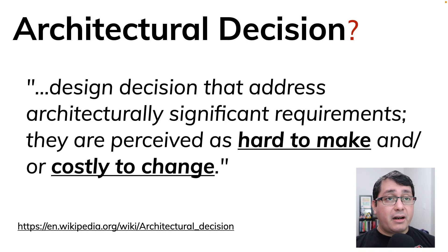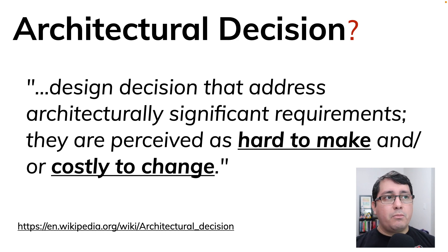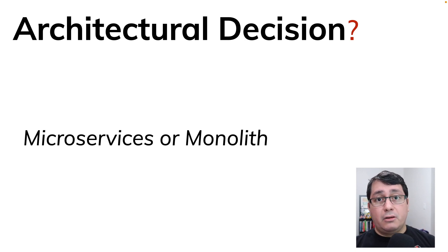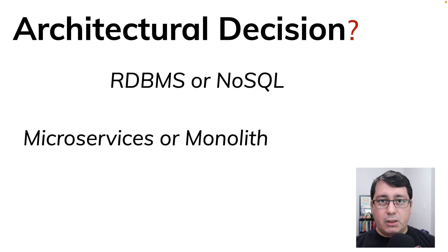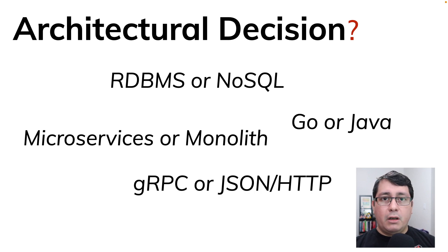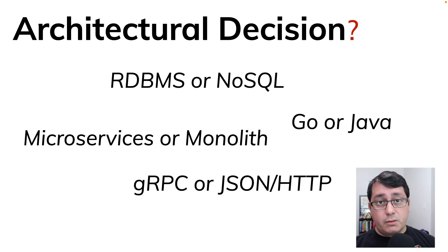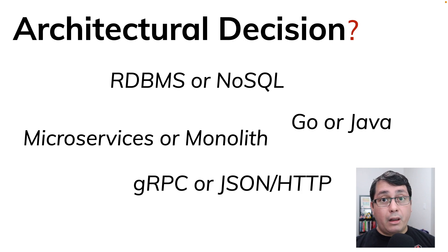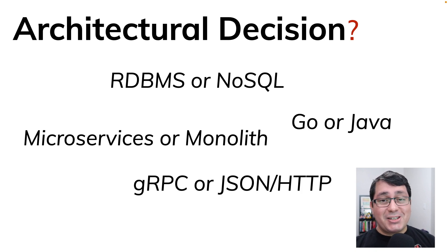So what is an architectural decision? An architectural decision is a design decision that addresses architecturally significant requirements that are perceived as hard to make and/or costly to change. For example, migrating between different software architectures like monolith to microservice, migrating from different data stores — relational database, NoSQL — replacing a programming language like Go to Java, or even thinking about the transport or communication method you're going to use, for example gRPC to JSON over HTTP. Those are decisions you shouldn't take lightly and should think through carefully before making them, otherwise it will be harder to go back and fix the problem.